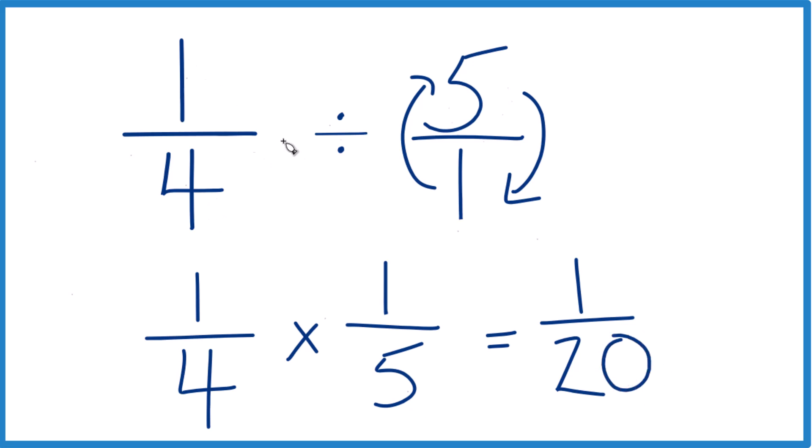And 1/4 divided by 5, or 1/4 times 1/5, equals 1/20. And if you think about it, we're taking 1/4, a fraction, and seeing how many times the whole number 5 goes into 1/4. We should end up with another fraction, which is going to be smaller than 1/4.